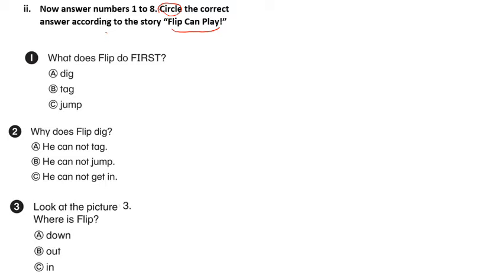Question number 1. What does Flip do first? A. Dig. B. Tag. Or C. Jump. Now if you don't remember, you have to go to the beginning of the story and read it again. In the story, they say Flip can jump. So this is what Flip can do first. You can circle only the letter C or you can circle the whole answer.